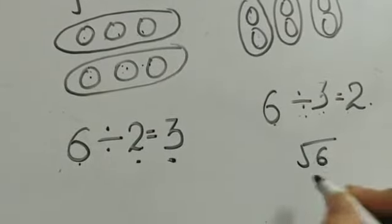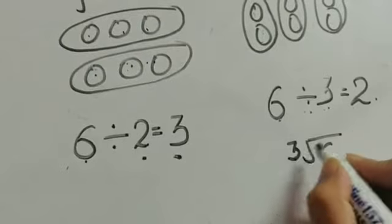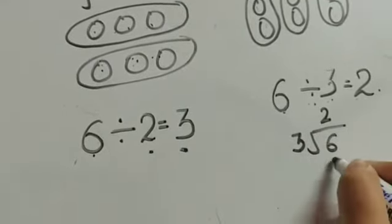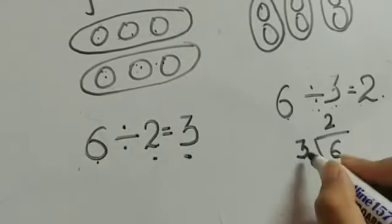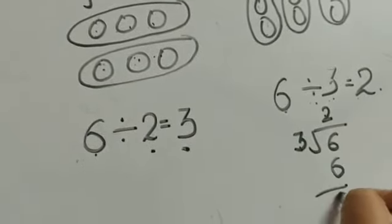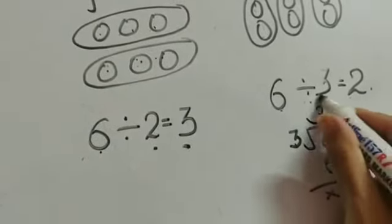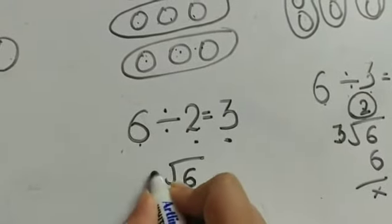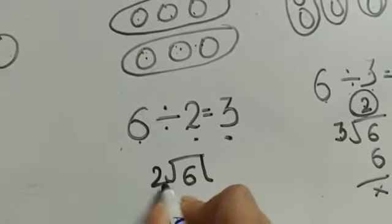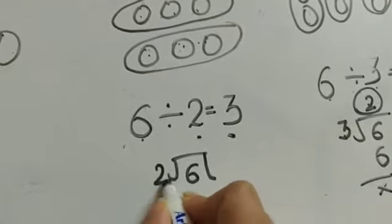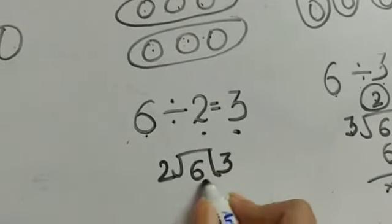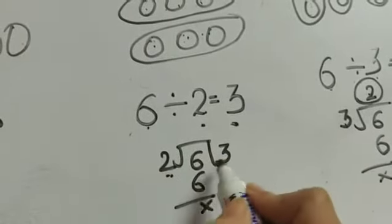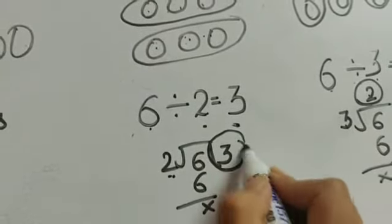For example, 6 divided by 3. 3 ones are 3, 3 twos are 6. So, 3 twos are 6, meaning each group has 2 balls. And here, 6 divided by 2. 2 ones are 2, 2 twos are 4, and 2 threes are 6. So, 6 balls divided into 2 groups and each group has 3 balls.